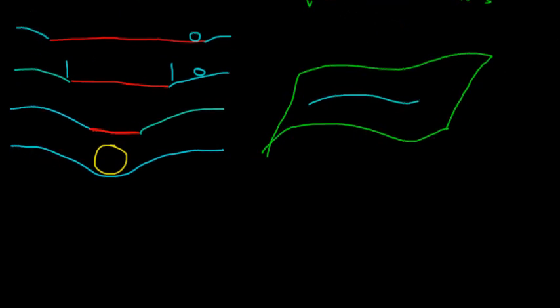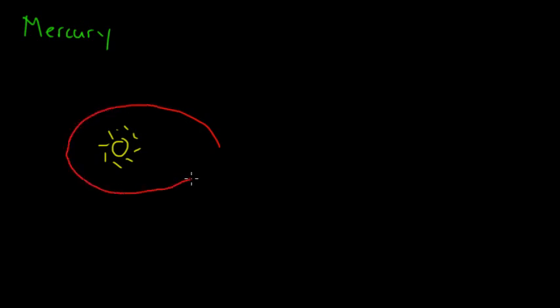The next thing we talked about is the orbit of Mercury. According to Newton, if I have the Sun here, then the orbit that Mercury takes, if it's a slightly elliptical orbit—this is highly exaggerated—this orbit will close off on itself.